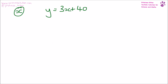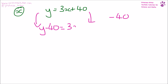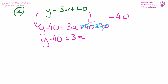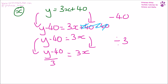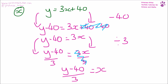y = 3x + 40. The first thing we need to do is to get rid of that 40. We minus 40 from each side, so y − 40 = 3x + 40 − 40. The two minus 40s cancel each other out, so we end up with y − 40 = 3x. We now need to get rid of that three, so we divide by three. y − 40 divided by 3 = 3x divided by 3. Three divided by three cancels to give us one, so we have y − 40 over 3 = x.